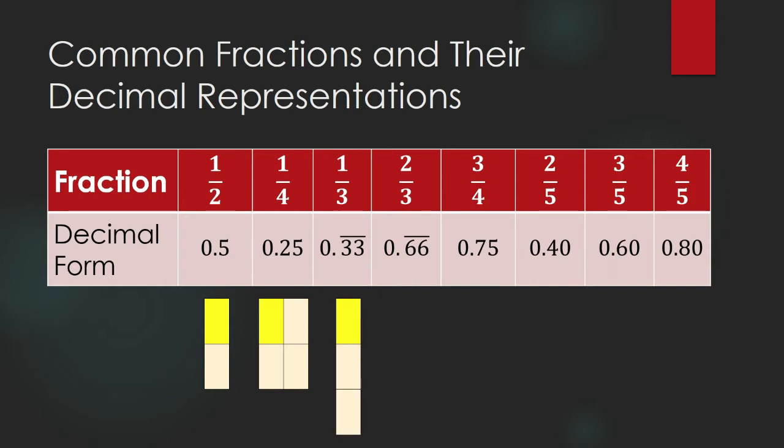Two-thirds is 0.666 repeating. Sometimes they just round it to the nearest hundredths. They round it to 0.67. So, two-thirds is that.